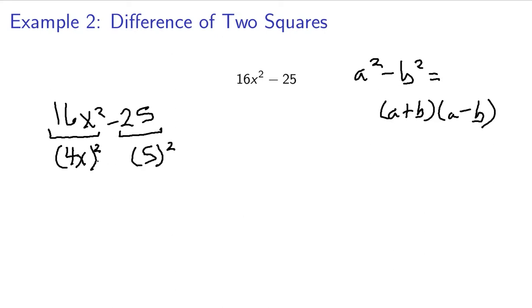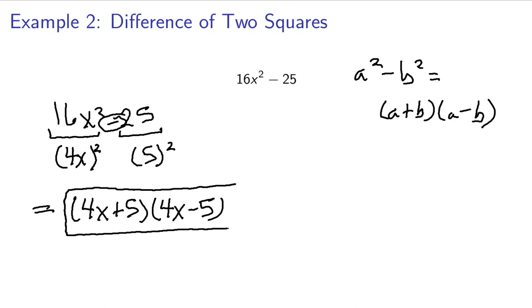So this falls into the category of a difference of two squares, because we have the subtraction sign here. That means this entire piece will become 4x plus 5 times 4x minus 5. And this is the factored form.